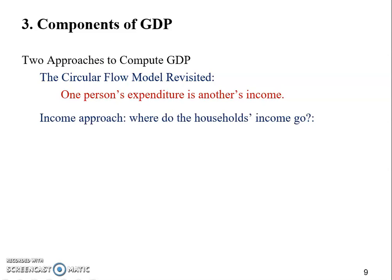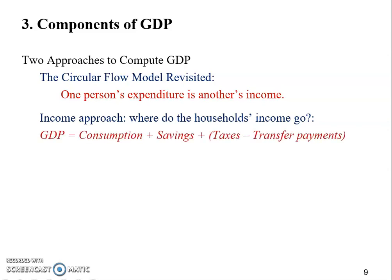If you focus on income, it's what we call the income approach. It looks at where households' income goes. Generally speaking, part of our income will be spent on consumption — food, clothing, utilities, housing. If we don't spend all of our income, we're going to save. We also need to pay taxes to our government.